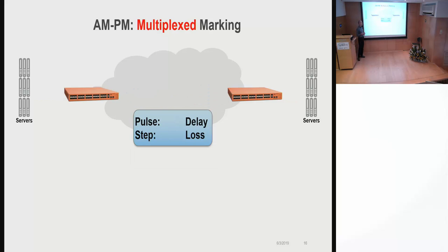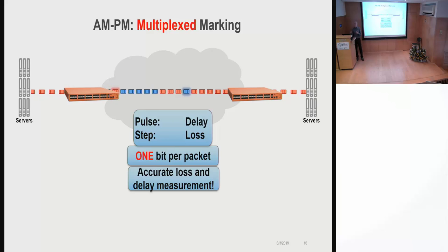But what you can do is use multiplex marking, so you can enjoy the best of both worlds. Most of the time you get this value which changes periodically. But more or less in the middle of each period, you have one packet with a marking bit which is different from the other packets. So this allows you to measure both delay and loss very accurately, to enjoy the benefits of both methods, but you only need one bit per data packet. This is probably the best method from the methods we saw so far.